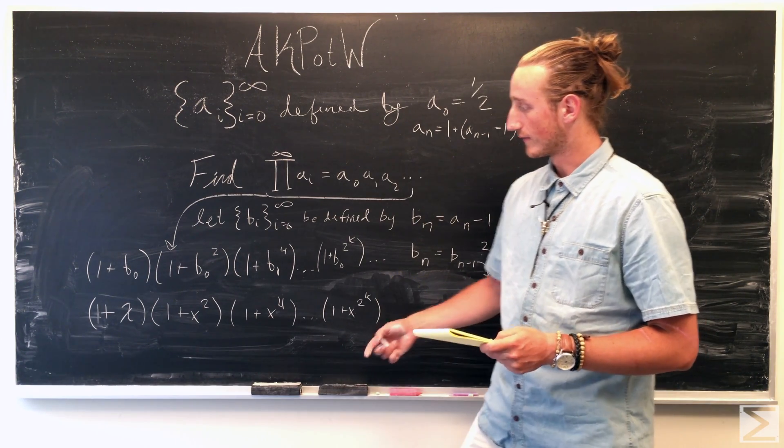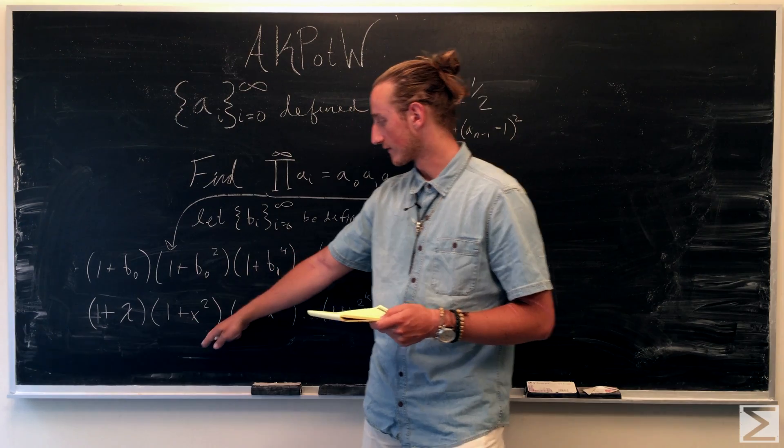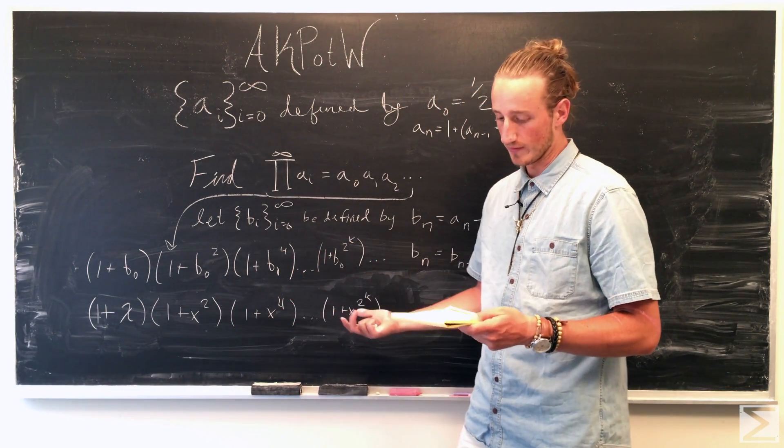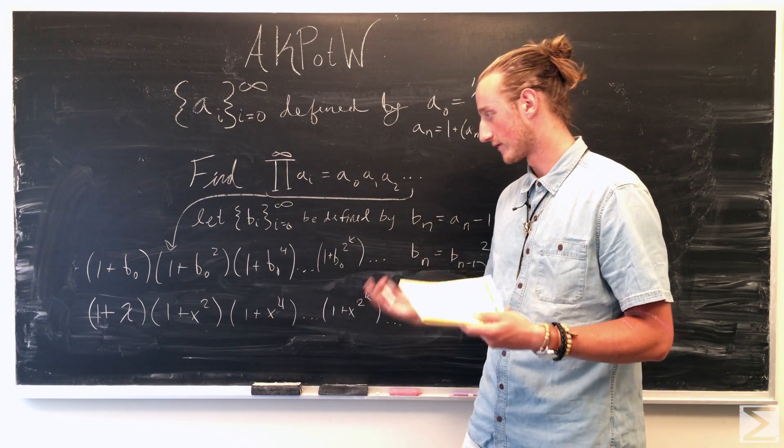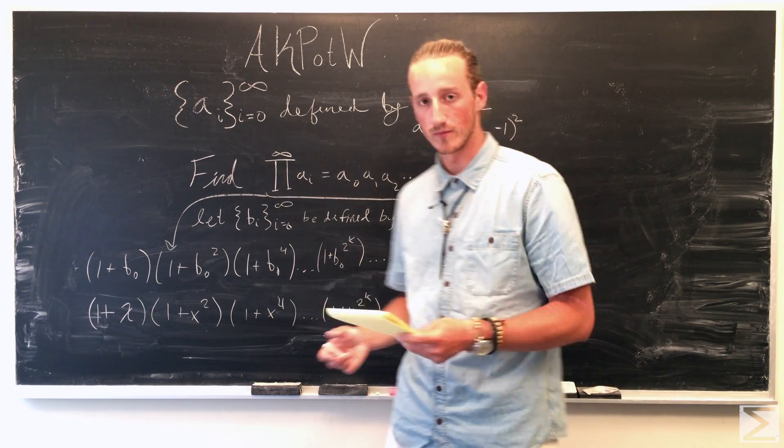And then so one plus x times one plus x squared is just going to be one plus x plus x squared, plus x cubed, and then so on and so forth. So you can write that out.